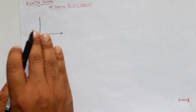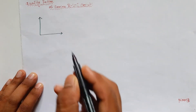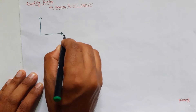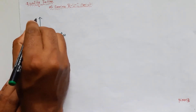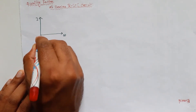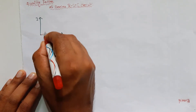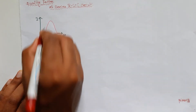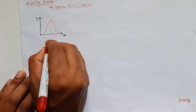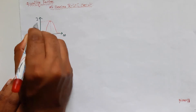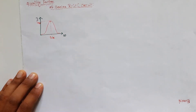Before going to quality factor, let's discuss what is the meaning and importance of quality factor. Then we derive the equation of quality factor. If you draw omega with respect to current, the curve will be increasing like this — at resonance the response will be maximum.